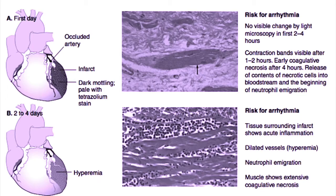After a completely occluded artery, on the first day the greatest risk to the patient is that of arrhythmia, such as ventricular tachycardia or ventricular fibrillation. These arrhythmias can often be lethal and are the number one cause of death following myocardial infarction. By gross pathology, there is no major change to the heart except for some dark mottling, which may be evident downstream of the occluded artery. By light microscopy, there is no visible change in the first two to four hours following MI. Contraction bands may be visible after one to two hours, especially by electron micrograph. There is early coagulative necrosis after about four hours, and at that point there is release of the contents of the necrotic cells into the bloodstream and the beginning of neutrophil emigration into the cardiac muscle.